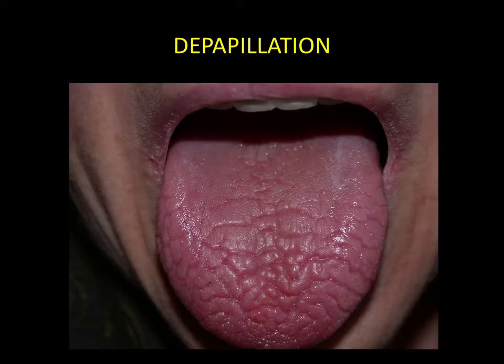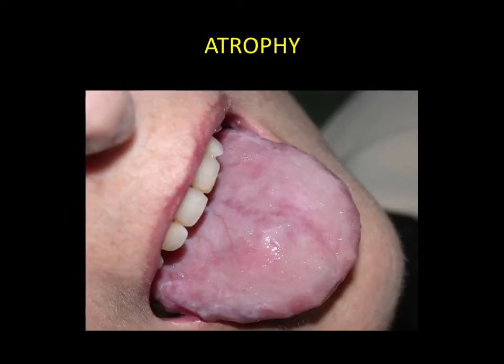Depapillation. This corresponds to a loss of lingual papillae, mainly observed in association with oligopatialism. Atrophy. In most cases, this lesion is a sequela secondary to an inflammatory response. It is characterised by a reduction in epithelial thickness. Here, you can see through to the underlying vascularisation of the dorsal surface of the tongue.